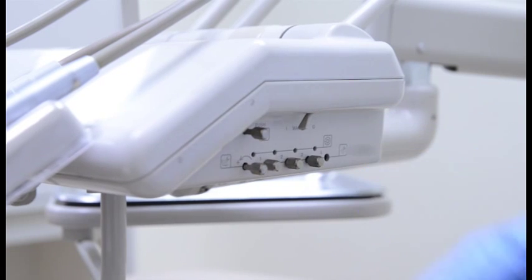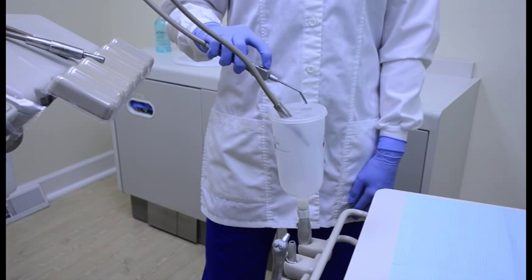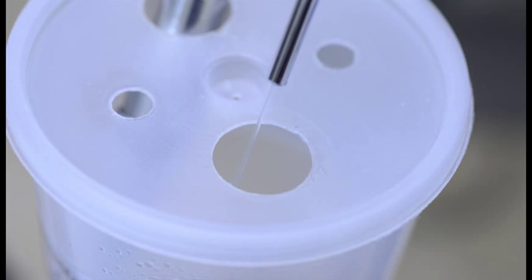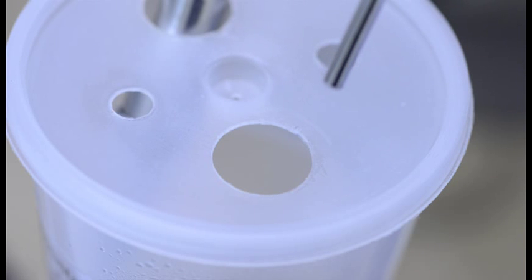Turn the dental unit on. With the handpiece hoses and air-water syringes in the assistant, activate the foot control and air-water syringes until Mentoclean comes out. Once you see Mentoclean dispensing, stop activating the instruments.